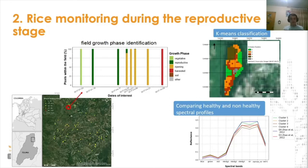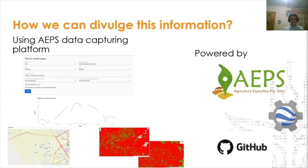This information allows us to inform farmers about heterogeneous plant developments inside their crop fields during critical stages. Finally, this information must be communicated in a precise and friendly way. We are developing a visualization model that integrates satellite images into our data capturing platform called AEPS, where technicians and farmers can query data for a specific place and planting date. They receive the NDVI historical data and can see how the field developed during the crop period. This is a way to provide additional data that supports their decision-making process, made possible by the available data in Google Earth Engine.